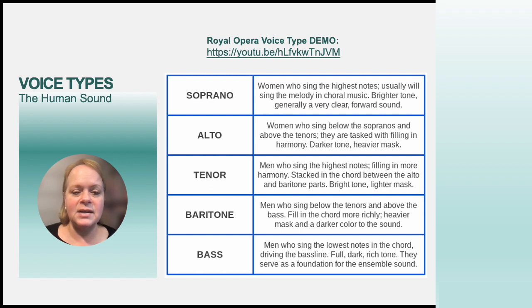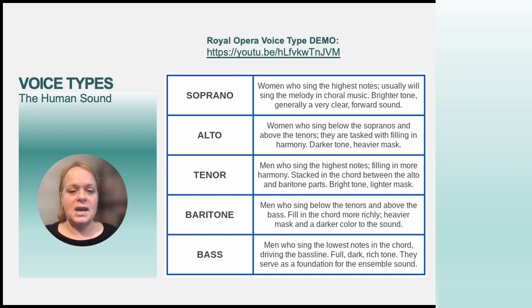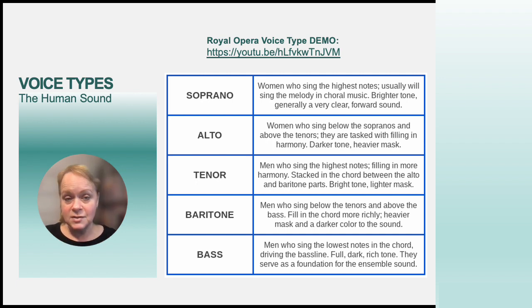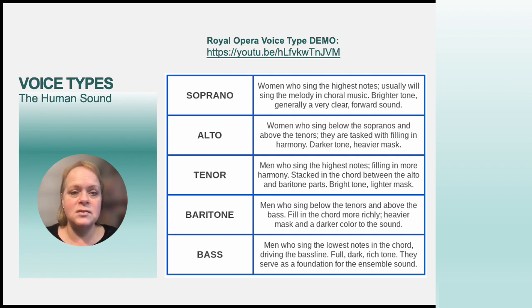Tenor — men who sing the highest notes — fill in the harmony, stacked in the chord between the alto and baritone parts, with a bright tone and lighter mask. Baritone sits between tenor and bass, filling in the chord more richly with a heavier mask and darker color. Bass men sing the very lowest notes, driving the bass line with a full, rich, dark tone that serves as the foundation for the ensemble. A link to the Royal Opera voice type demo is available — a short, excellent video sung by the Royal Opera Company in England.